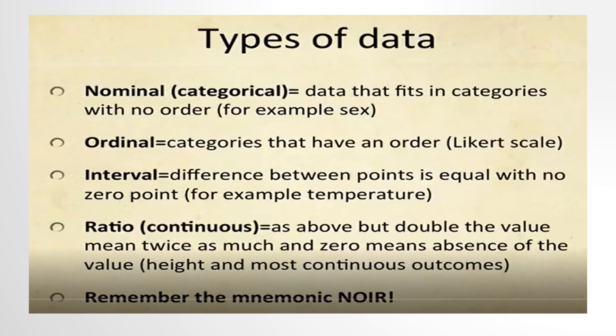For nominal or categorical data, these are data that fit into categories with no order — for example, sex. For ordinal, these are categories that have an order, like Likert scales. For example, for the question 'How satisfied are you with our service?': 1 = very unsatisfied, 2 = somewhat unsatisfied, 3 = neutral, 4 = somewhat satisfied, 5 = very satisfied. This is an example of ordinal data using Likert scales.